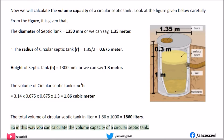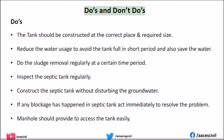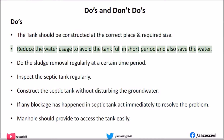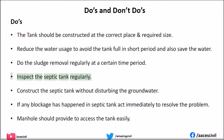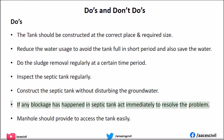So in this way you can calculate the volume capacity of a circular septic tank. Now for the Do's: the tank should be constructed at the correct place and required size. Reduce water usage to avoid the tank filling up in a short period and also save water. Do remove the sludge regularly at certain time periods. Inspect the septic tank regularly. Construct the septic tank without disturbing the ground water. If any blockage occurs, act immediately to resolve the problem. A manhole should be provided to access the tank easily.